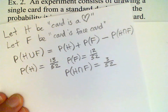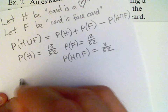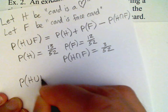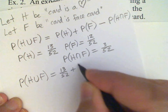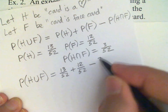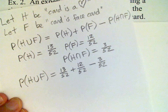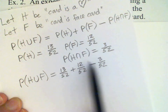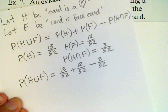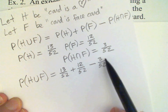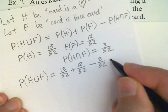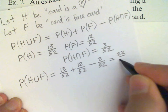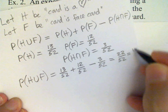So now it only remains to add these things up. The probability of H union F is 13 out of 52, plus 12 out of 52, minus 3 out of 52. Remember, we have to subtract off the probability of the intersection because we've counted that twice — we counted the heart face cards once because they were hearts, and again because they were face cards. So to get the correct answer, we need to subtract that intersection off to correct for the double count. This gives us 22 out of 52, which reduces to 11 out of 26.